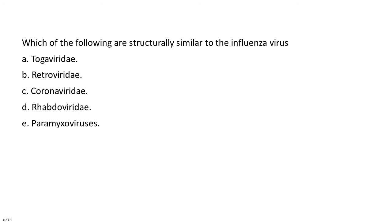Which of the following are structurally similar to the influenza virus A? A. Togaviridae. B. Retroviridae. C. Coronaviridae. D. Rhabdoviridae. E. Paramyxoviruses.